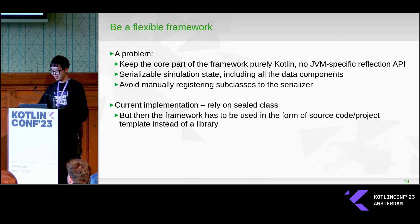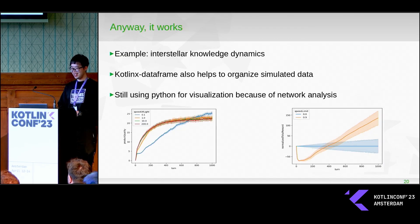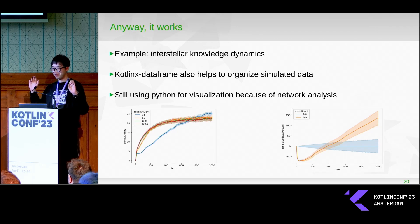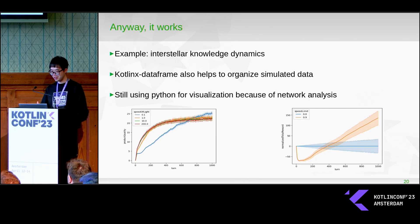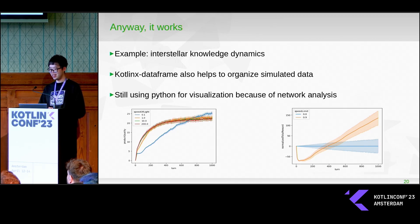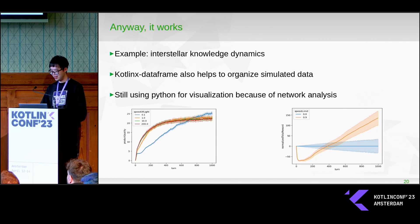I'm also happy to hear if you have any suggestions to solve this problem. Anyway, it works. This is an example of a simulation — simulating knowledge dynamics, specifically knowledge diffusion in an interstellar society. It's nice to have the Kotlin dataframes to help manage the simulation and the data. I'm still using Python for visualization because there are still some network visualization libraries missing in Kotlin, and it's more convenient in Python for this kind of analysis.